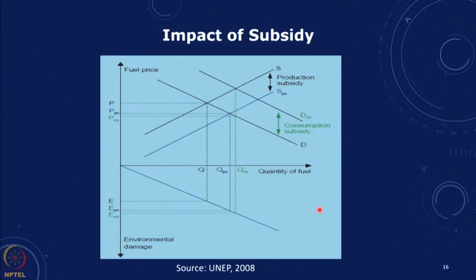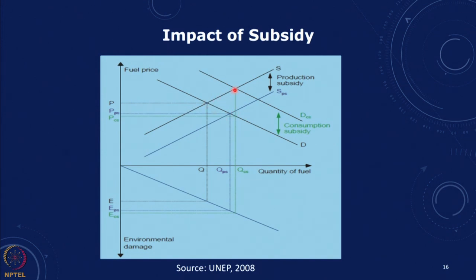This example from Kolstad and a UNEP report shows: if supply and demand intersect at the original point, and we provide a production subsidy, the supply curve shifts and the quantity of fossil fuel used increases, so environmental damage increases. Similarly, if we provide a consumption subsidy, we move to a new point and environmental damage again increases. So we can do this kind of analysis to look at the impacts of subsidies.